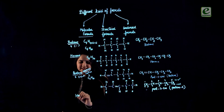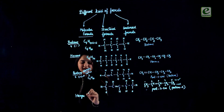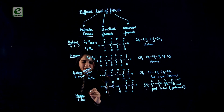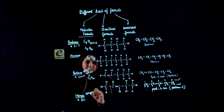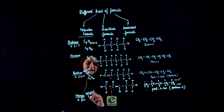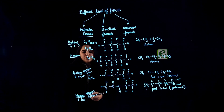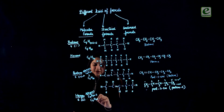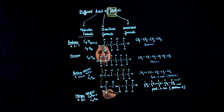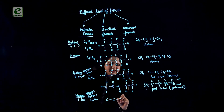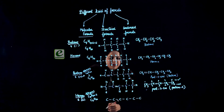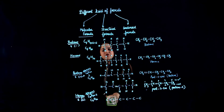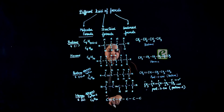Let's consider hexyne. 'Hex' indicates 6 carbons and 'yne' indicates a triple bond, so it belongs to alkyne. Alkyne has the formula CnH2n−2. So if we have 6 carbons, it will have 6×2 = 12 minus 2 = 10 hydrogen atoms. Writing the structure: we write down 6 carbon atoms and then put a triple bond at one position — we cannot put triple bonds at every place, only one position.